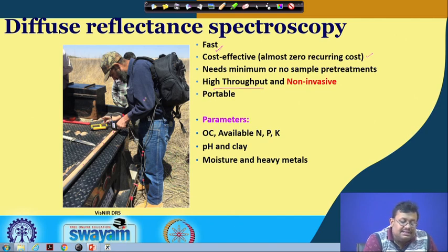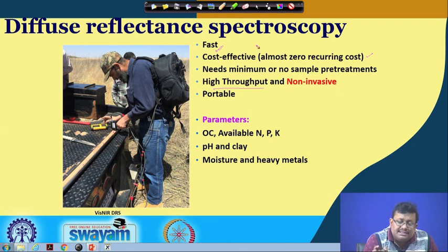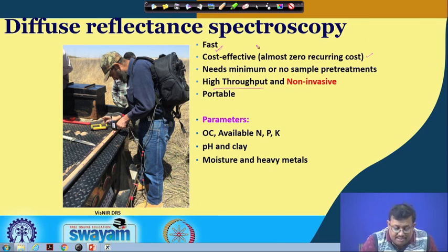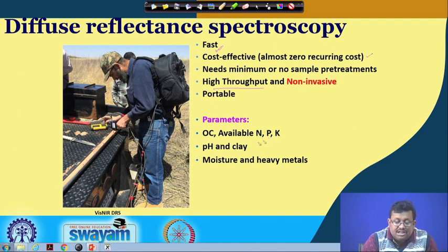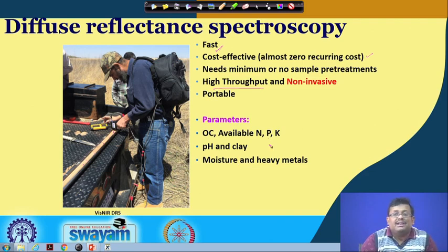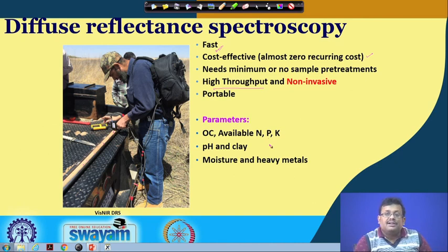It is also portable. Due to all these advantages, we are now using these diffuse reflectance spectroscopic sensors extensively in the soil science discipline. Parameters that can be measured include organic carbon, available nitrogen, phosphate, potassium, pH, clay, sand, silt, moisture, and heavy metals — a wide range of parameters through this diffuse reflectance spectroradiometer.